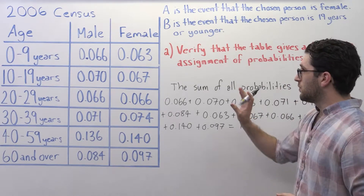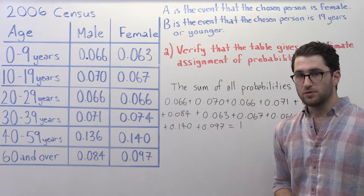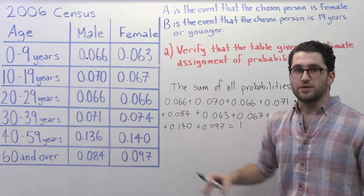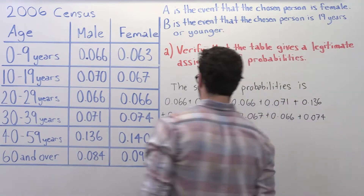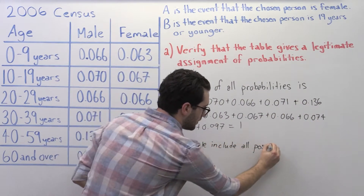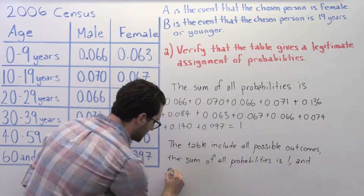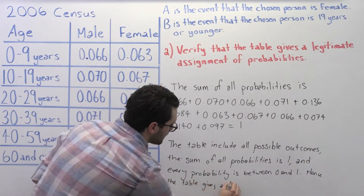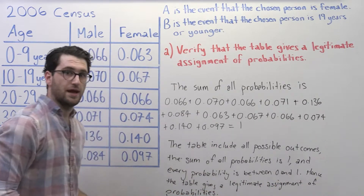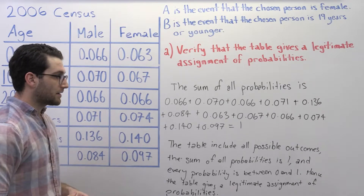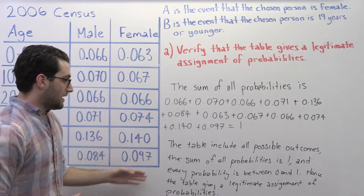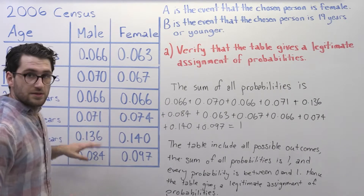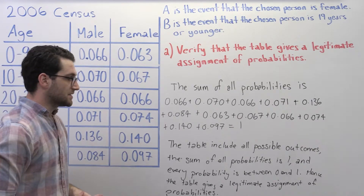We've shown that all possible outcomes are in the table. We've looked at each individual probability and shown that it's between 0 and 1. And we've summed up all probabilities and shown that that equals 1. The table includes all possible outcomes, the sum of all probabilities is 1, and every probability is between 0 and 1. Hence, the table gives a legitimate assignment of probabilities.